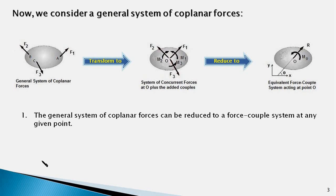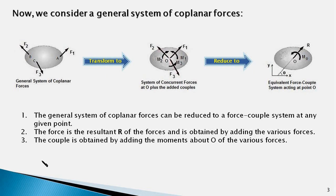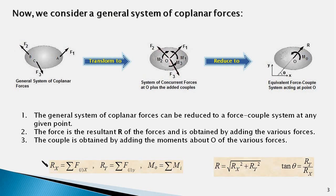In summary, I would like you to take note of these important points. First, the general system of coplanar forces can be reduced to a force-couple system at any given point. Second, the force of the force-couple system is the resultant R of the forces, obtained by adding the various forces. Third, the couple is obtained by adding the moments of the forces about point O. You will find the following equations quite handy in computing the resultant force R and the resultant moment MO.